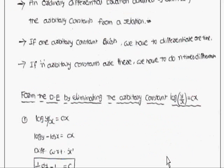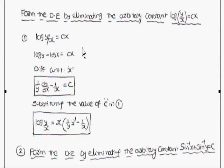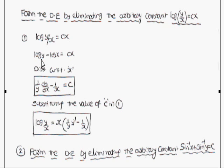Let us consider one example. Form the differential equation by eliminating the arbitrary constant from log(y/x) = cx. If you look at this relation, c is an arbitrary constant — only one arbitrary constant is there. So you have to differentiate only one time. Log(y/x) = cx means log y minus log x = cx.